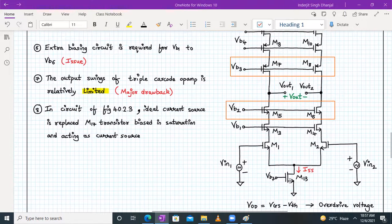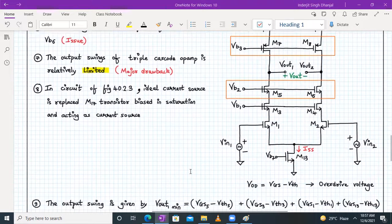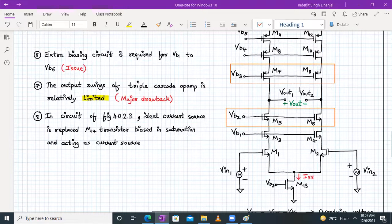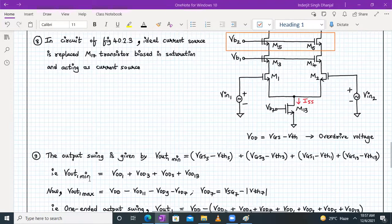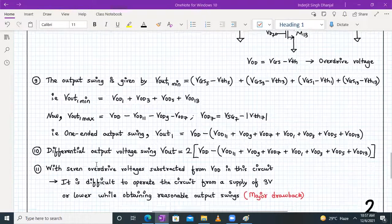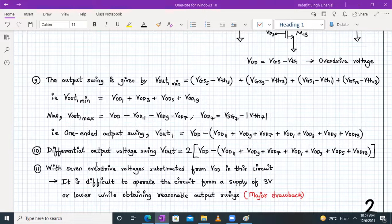VB7 will make sure that M13 operates in saturation region. Let's call Vod the overdrive voltage. If I calculate the output swing, Vout1 minimum will be overdrive voltage for M5 plus M3 plus M1 plus M13. Vout1 minimum will be Vod1 plus Vod3 plus Vod5 plus Vod13. Vout1 max will be VDD minus overdrive voltage of M7 minus overdrive voltage of M9 minus overdrive voltage of M11.